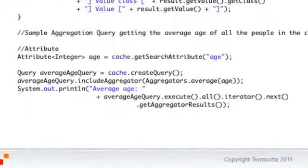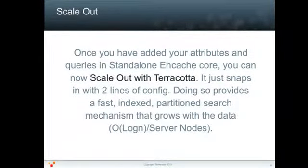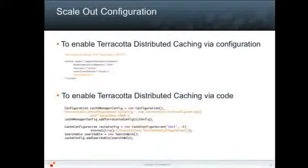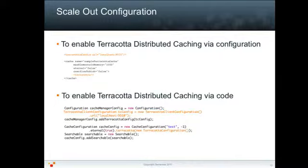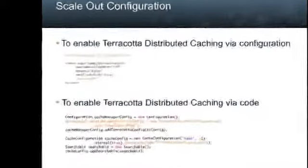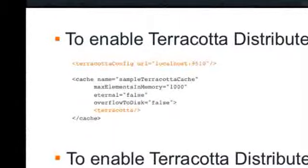Here is another query that demonstrates aggregation. Once you have added your attributes and queries in standalone eHcache core, you can now scale out with Terracotta — it just snaps in with two lines of configuration. Doing so provides a fast, indexed, partitioned search mechanism that grows with your data. You can turn clustered caching on either through XML or through code. In either case, you specify which caches are to be clustered and tell the cache manager what server to talk to.